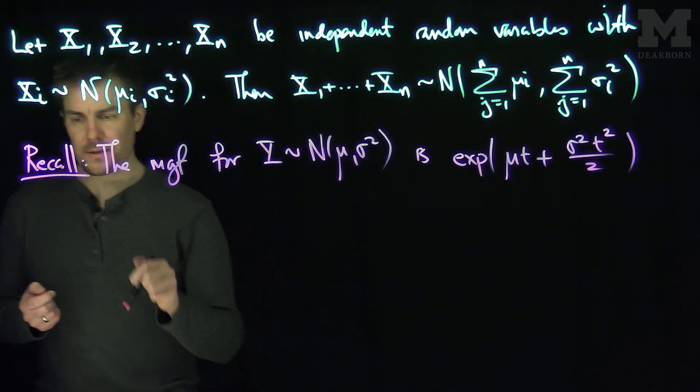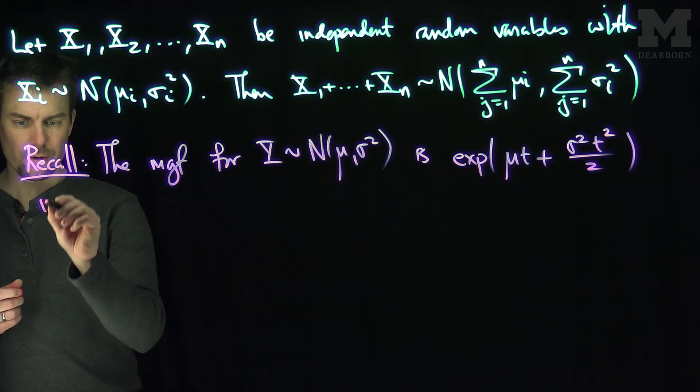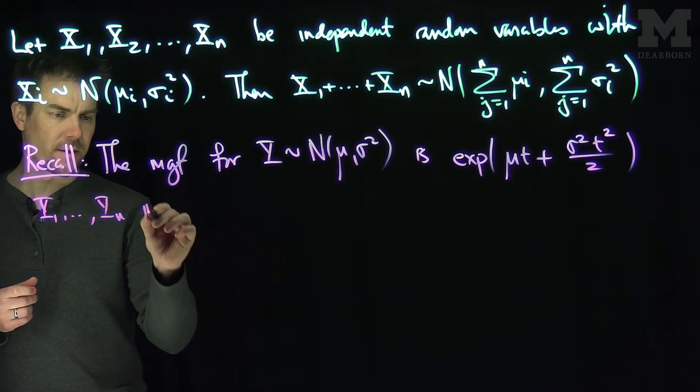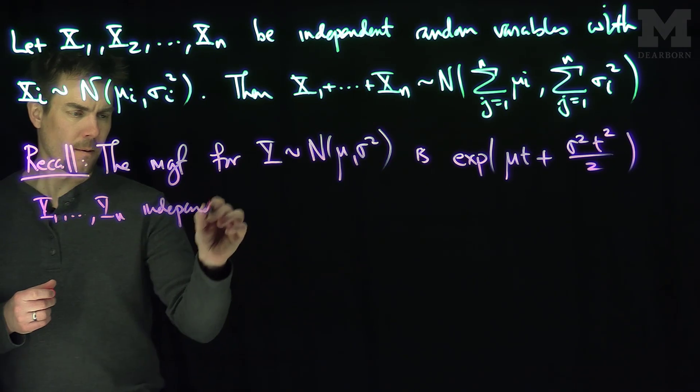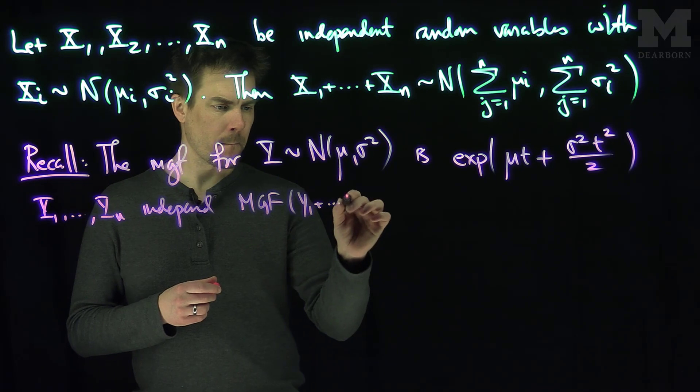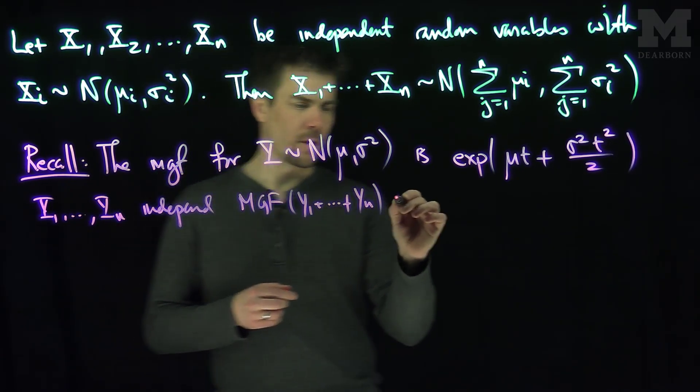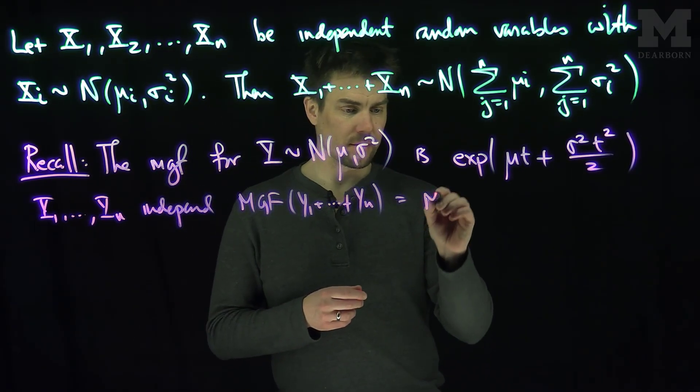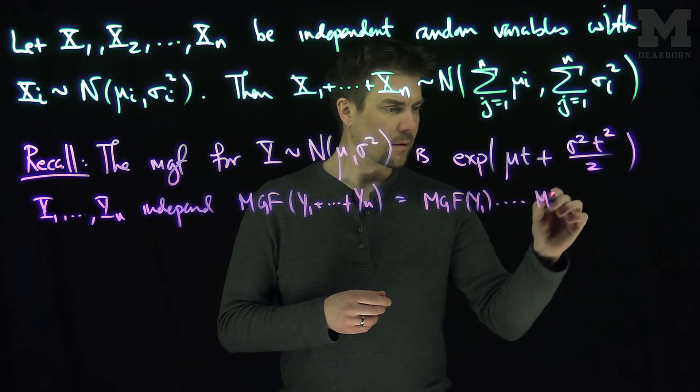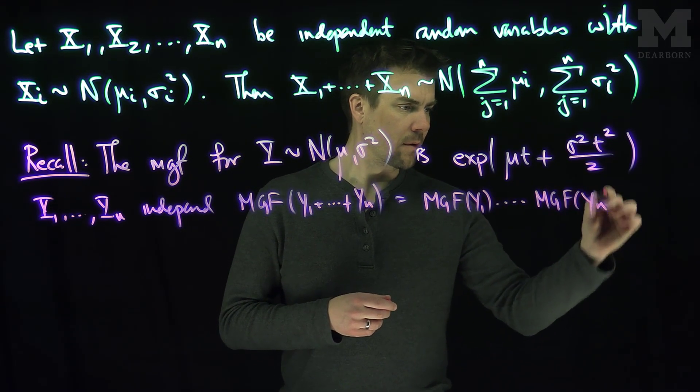And so now we're going to use the fact that in general, if Y₁ through Yₙ are independent, then the MGF of the sum is going to be the product of the MGFs. That's the properties of exponentials and independence.